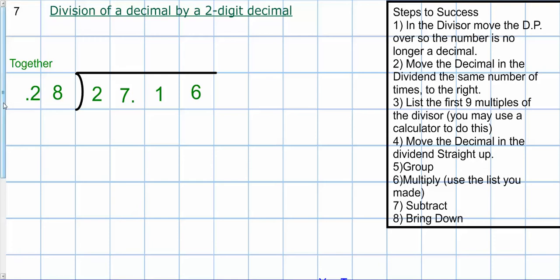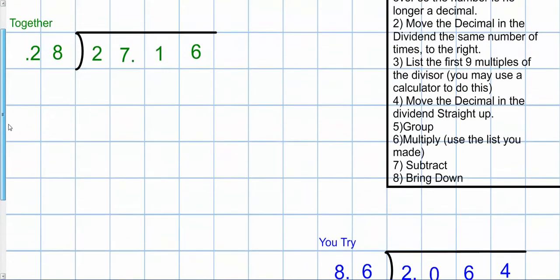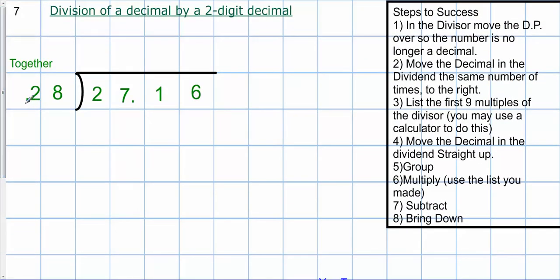And then you've got two more to try on your own. So again, first thing I'm going to do, move my decimal point two spots over. Move my decimal spot two spots over. So there's my new decimal point right there. So I'm going to give the video pause while I list my multiples of 28. Again, I'm going to use my calculator. So there are all my multiples. All right.